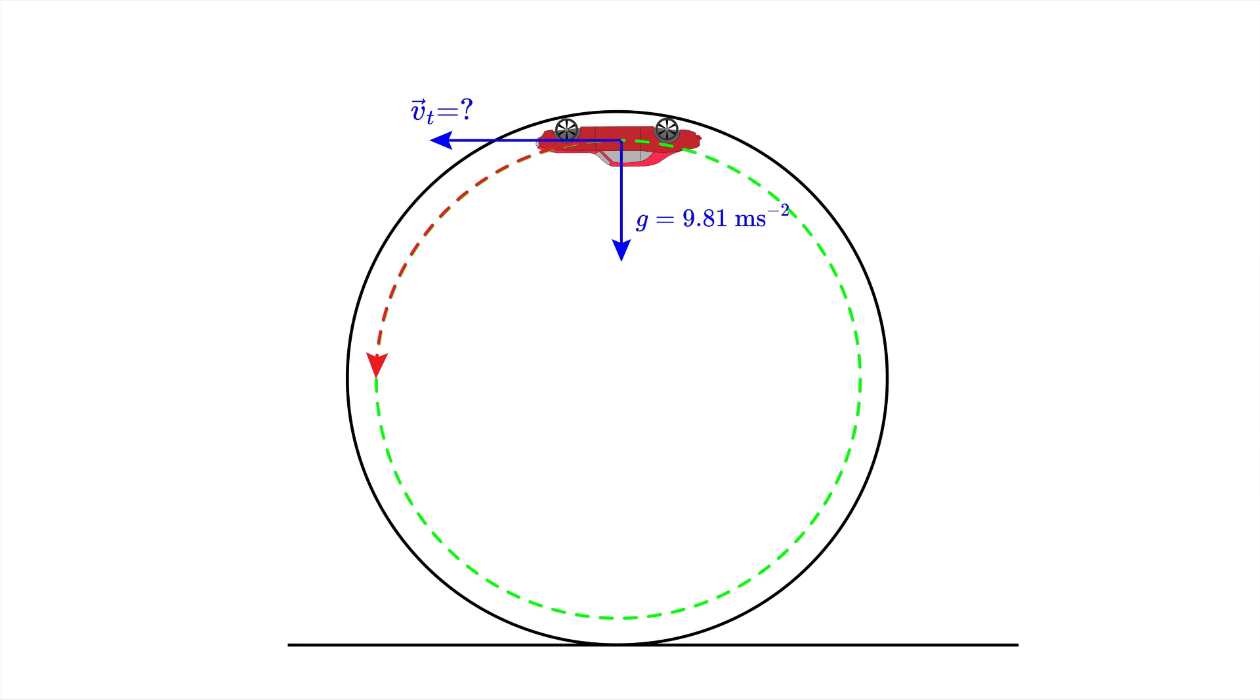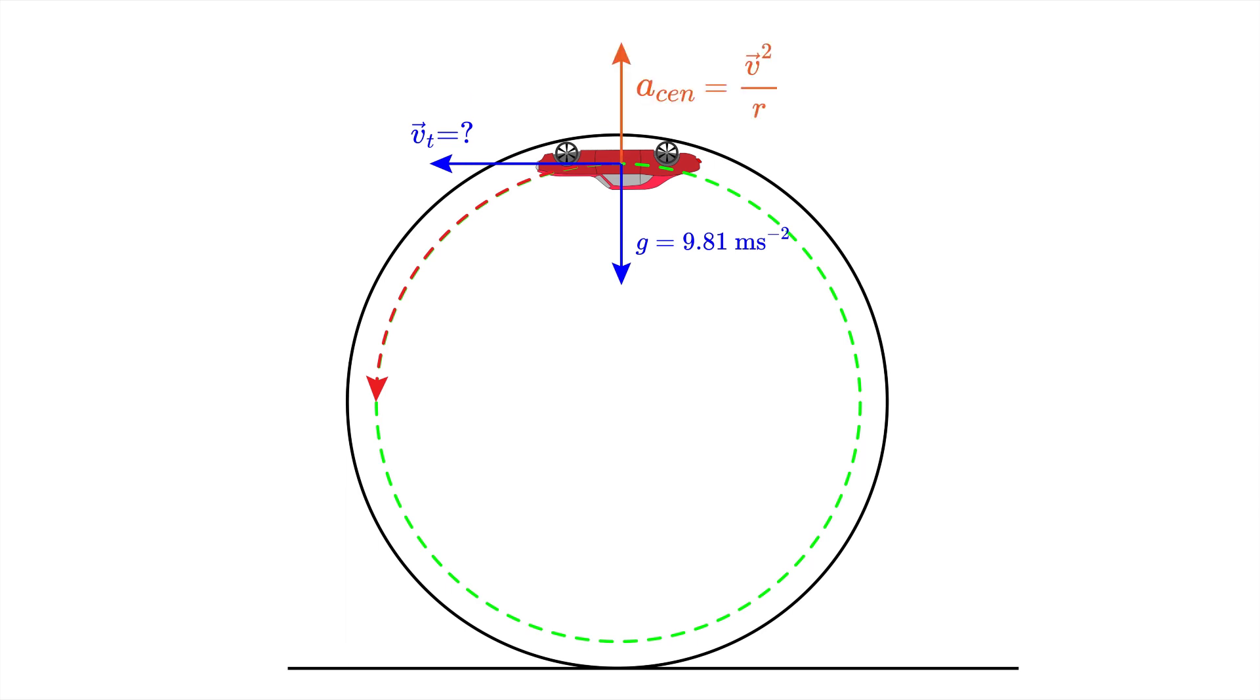This creates an apparent acceleration called centrifugal acceleration, which has to exactly balance out the gravitational acceleration. And the general formula for the centrifugal acceleration is v squared over r. But in our case we work with r prime, and this has to be equal to our g.